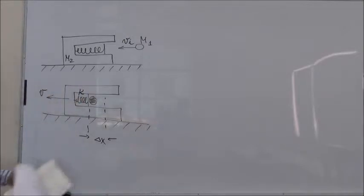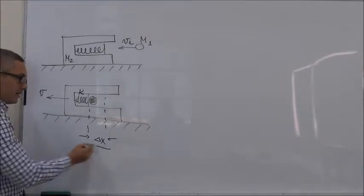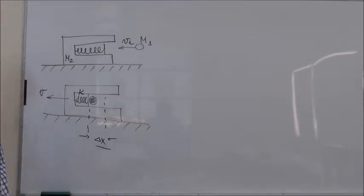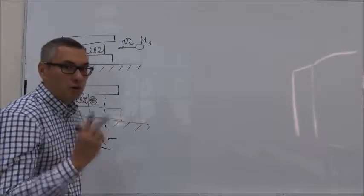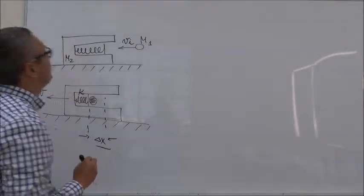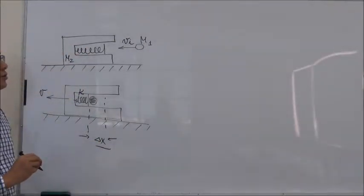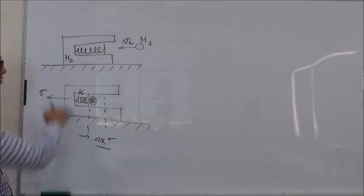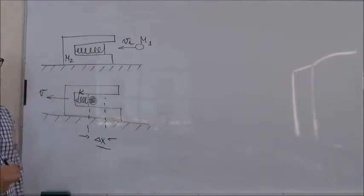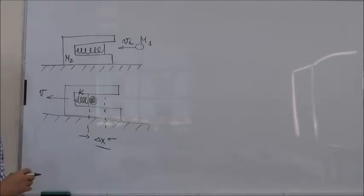So how do we find delta X, the maximum compression? Well, there are two laws that we can use. The first one is the conservation of total mechanical energy. As you can see, there is no friction, so there is no loss in energy, in the mechanical energy.